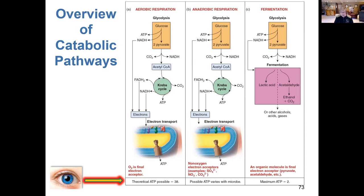What you'll notice when you look at the first two is that for the most part they're very similar, almost identical with respect to glycolysis, followed by the citric acid cycle or Krebs cycle, and then finally electron transport. The major difference lies in what the final electron acceptor is. In aerobic respiration, it is molecular oxygen that ultimately combines with those electrons in electron transport, along with hydrogen ions, to produce H2O or water. In anaerobic respiration, the final electron acceptor is not oxygen — that's why we use the term anaerobic, without oxygen.